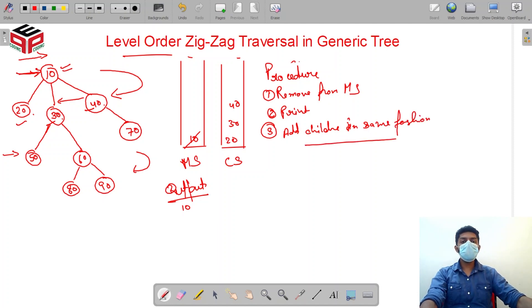And how we'll be keeping the account of the fashion? We'll declare a variable named level. We'll initialize it to one. And whenever my main stack becomes empty, after 10 is removed, now my main stack is empty. When my main stack is empty, I now actually interchange main stack and child stack. So this one becomes child stack now. The first one to be removed is 40. So 40 gets removed, 40 gets printed, and children of 40, that is 70, gets added to the child stack.